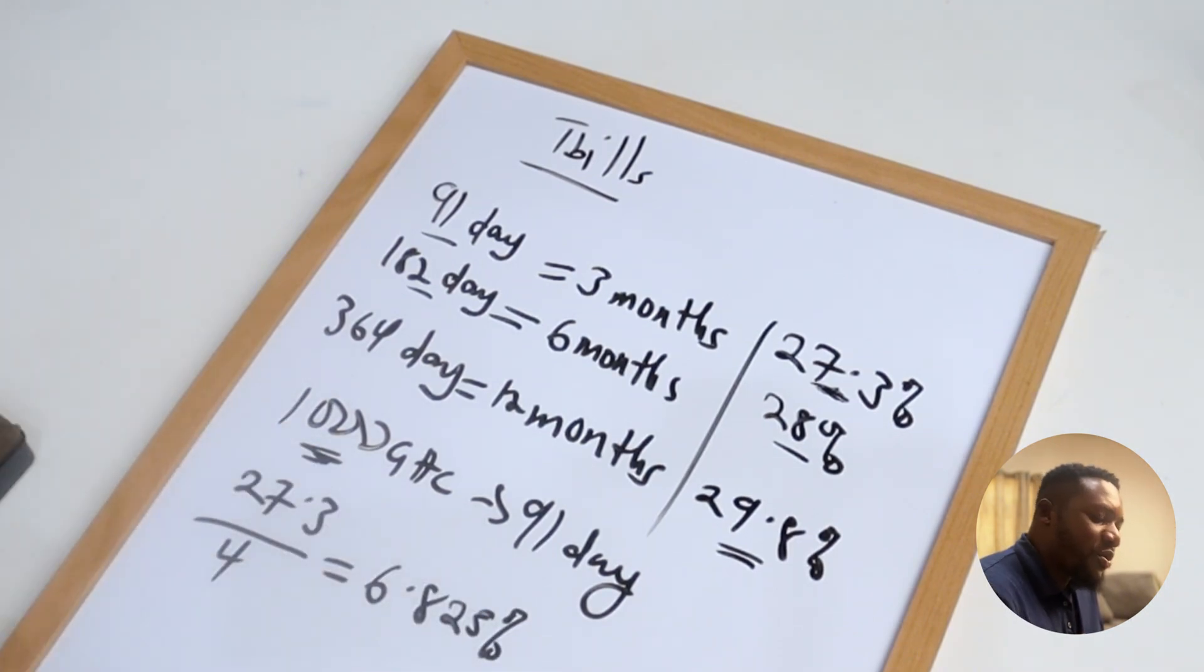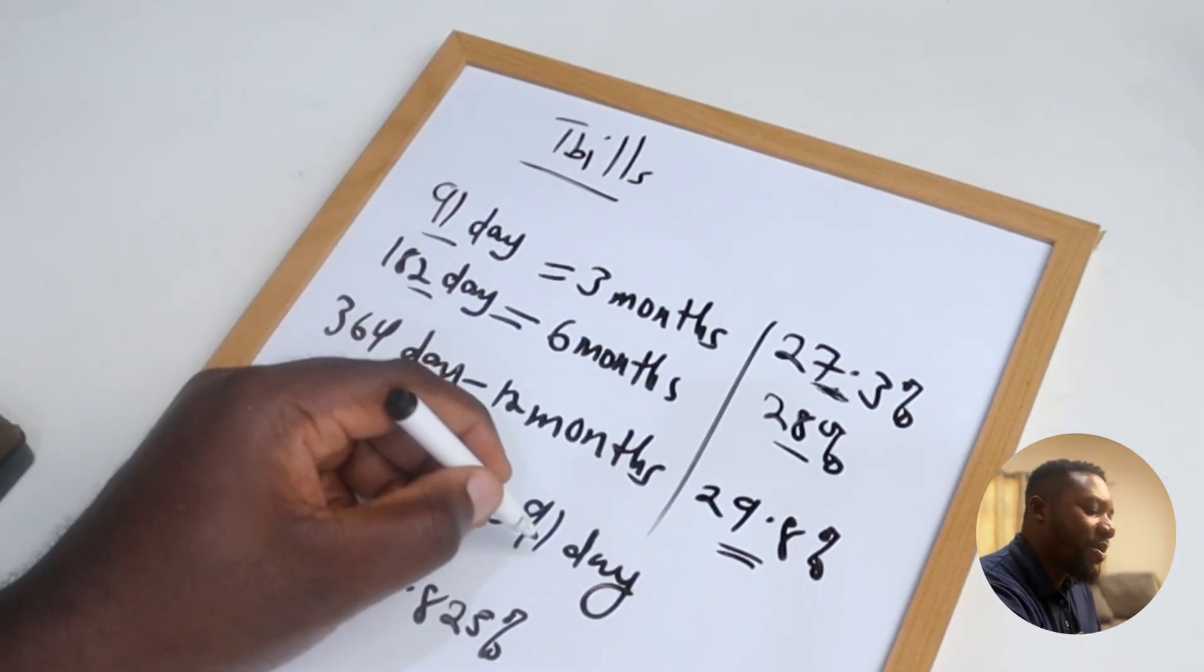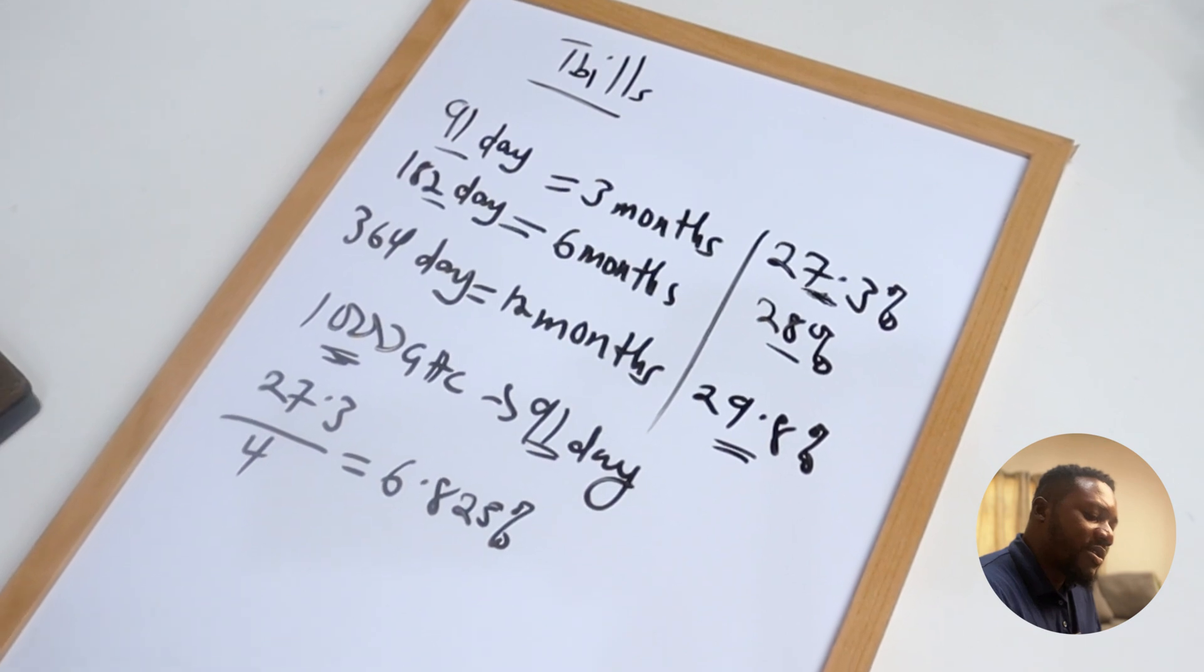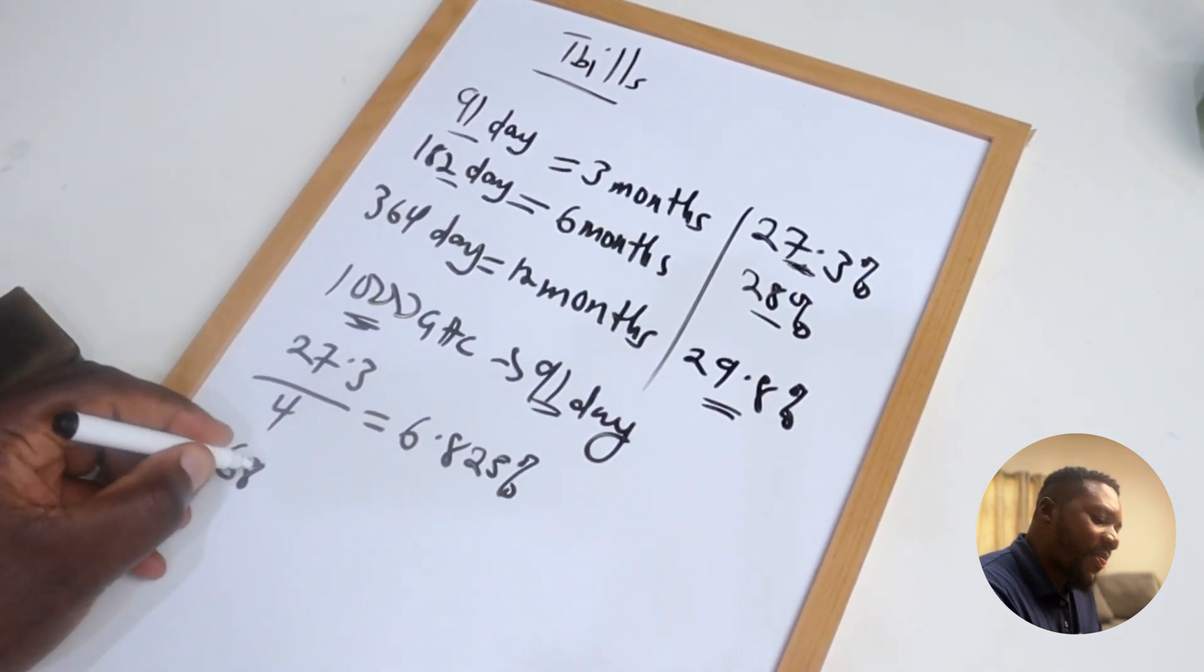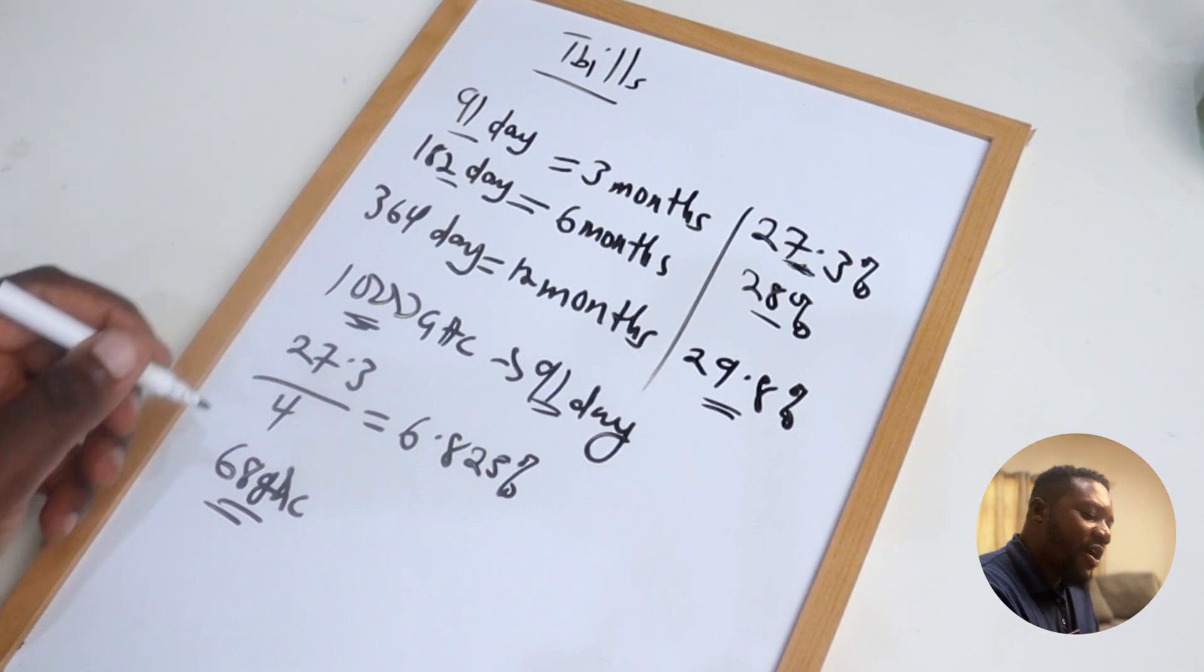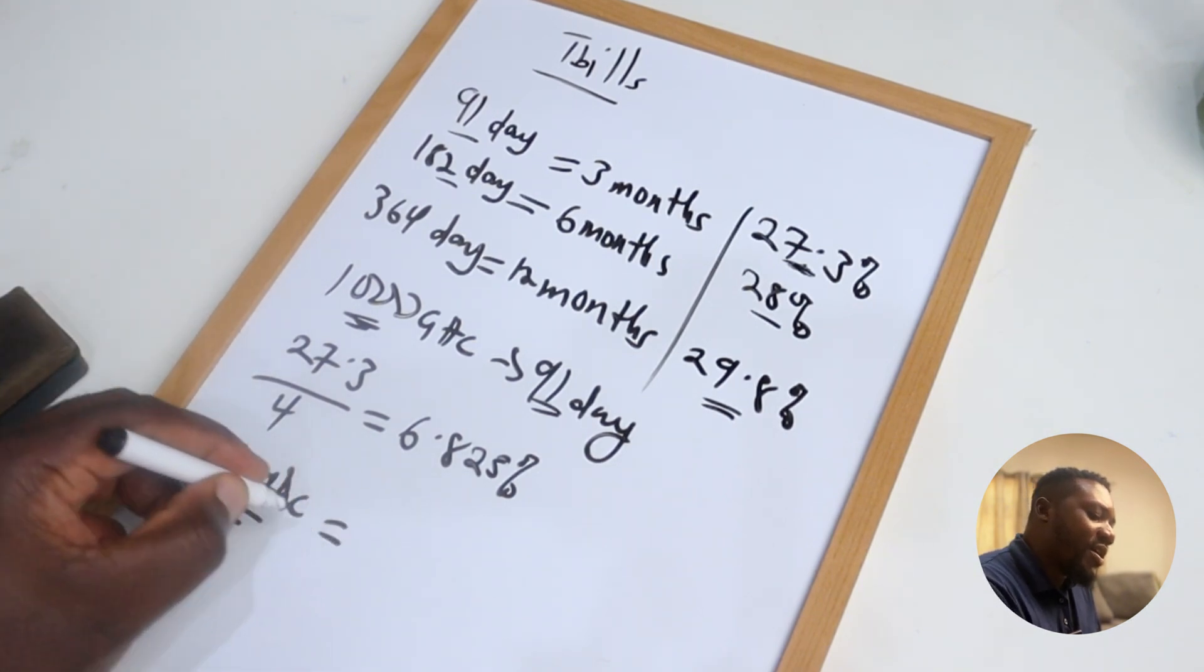Let's check on the calculator. Okay, 6.825. So this is what you're going to get. This percentage is what you're going to get at the end of three months. This is how much you're going to get, 68 Ghana cedis.